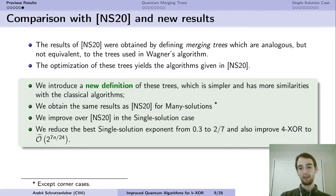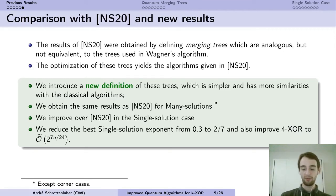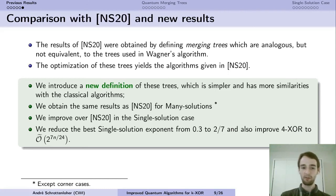These results are from a paper at Eurocrypt 2020, and were obtained by defining a class of quantum algorithms based on the merging building block, analogous but not equivalent to classical merging strategies. These are not the same merging trees as in Wagner's algorithm, but they provide a family of quantum algorithms achieving these complexities.